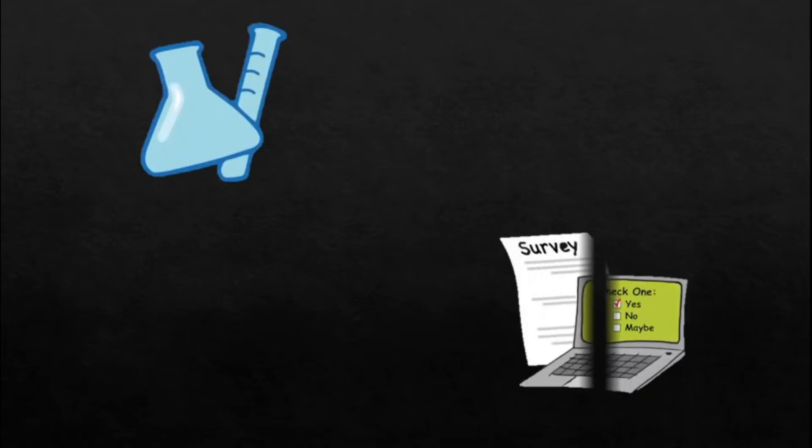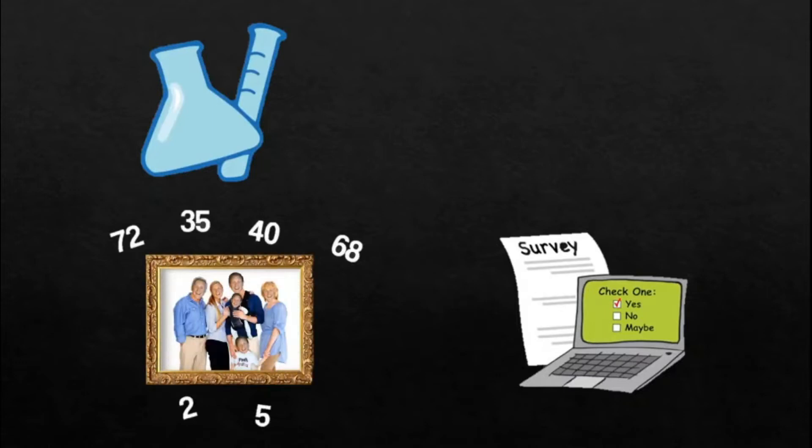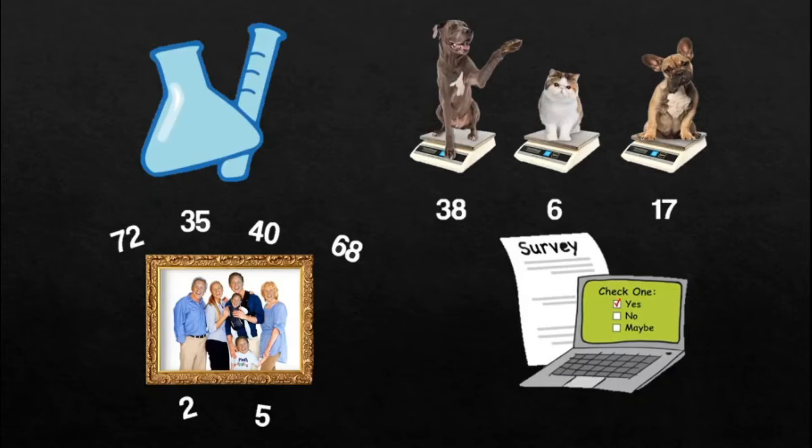Math often deals with data sets, and data sets are just collections or groups of numbers. These numbers may be the results of scientific measurements or surveys or other data collection methods. For example, you might record the ages of each of your family into a data set, or you might measure the weight of each of your pets and list them on a data set. Those data sets are fairly small and easy to understand, but you can have much bigger sets.